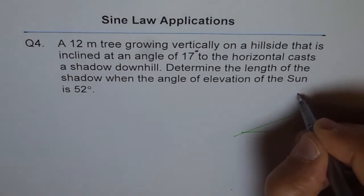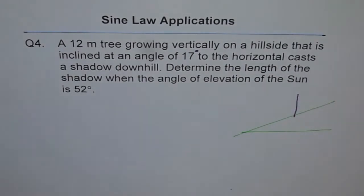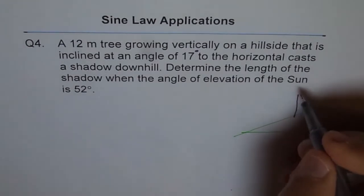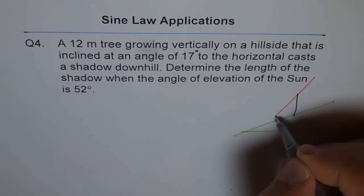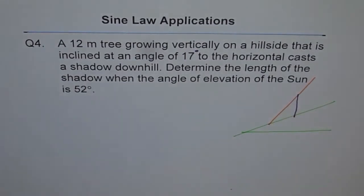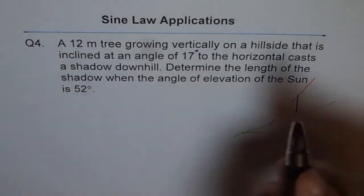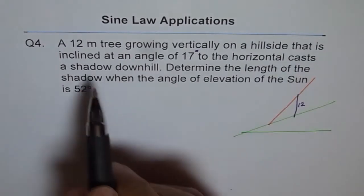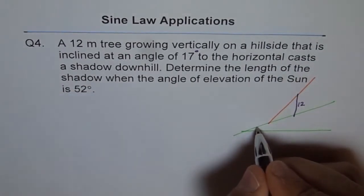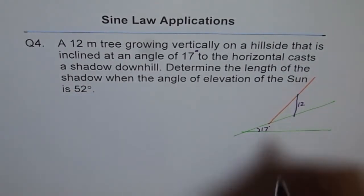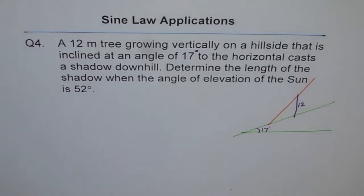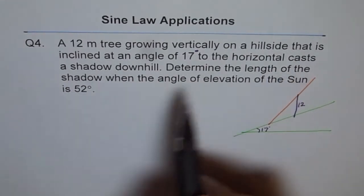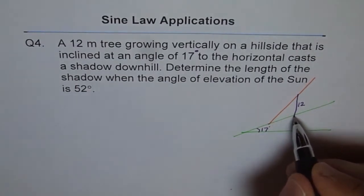Let's draw that same tree here — that is the tree, and the shadow is now like this. Now let's read the question once again. A 12 meter tall tree, so this height is 12. It is growing vertically on a hillside inclined at 17 degrees to the horizontal, casting a shadow downhill. We need to determine the length of the shadow, which is unknown this time.